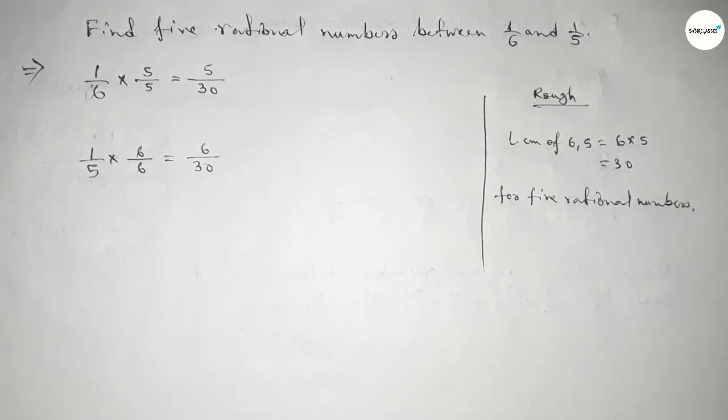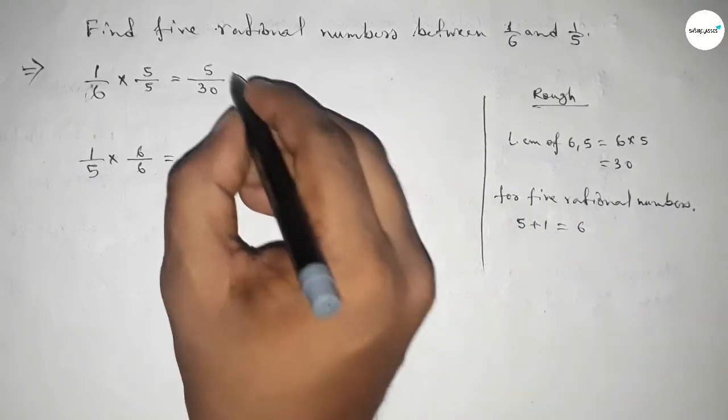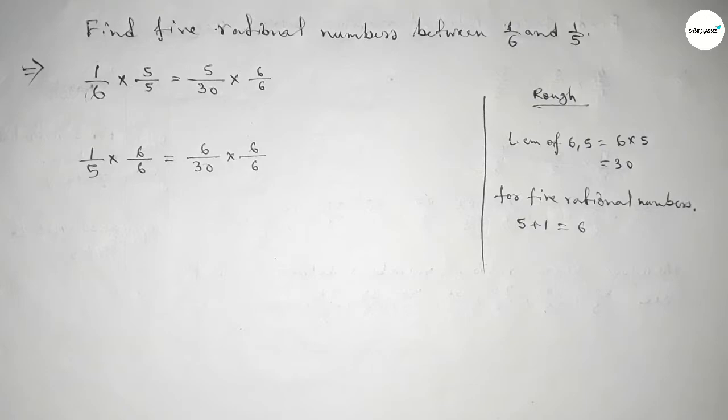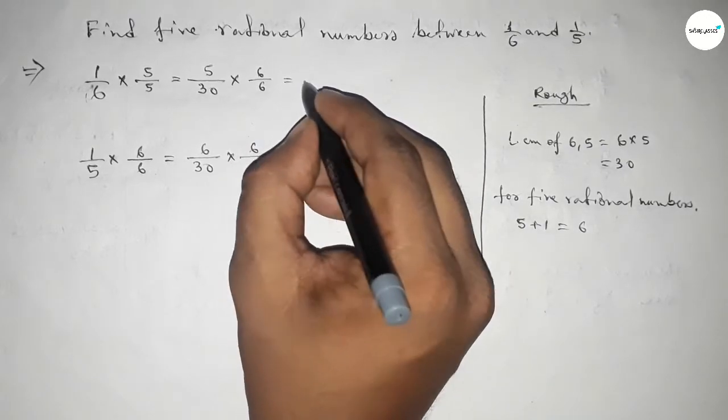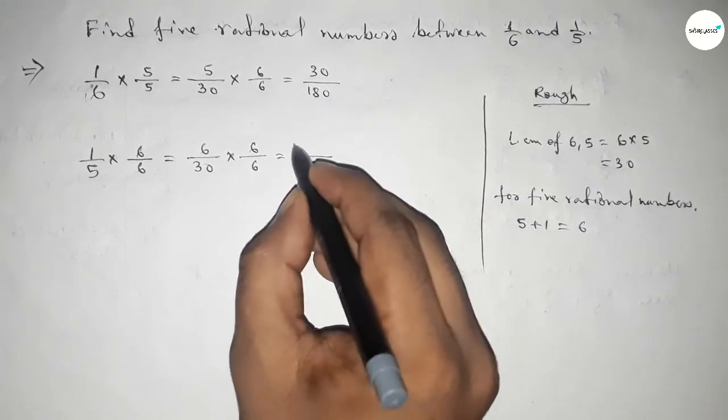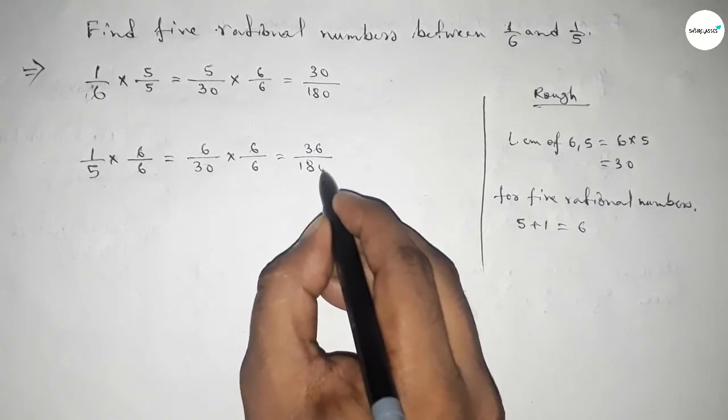So we should multiply 5 plus 1 equal to 6 with up and down with both numbers by this way. So this is 30 over 180 and this is 36 over 180.